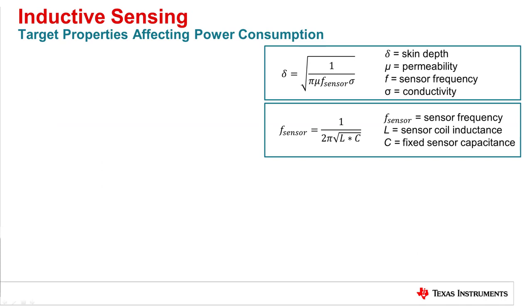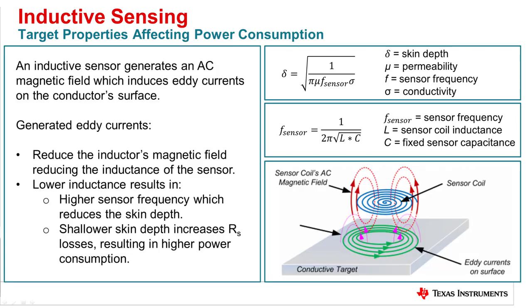Since skin depth is a function of the sensor frequency, one way to increase the skin depth is by raising the inductance of the LC tank, which in turn reduces the sensor frequency. Shallower skin depths also increase RS or series resistance losses, which equates to higher power consumption. The LDC calculator tool, located on every LDC product page, has a skin depth tab to help determine if a conductor is good enough for an LDC sensor.